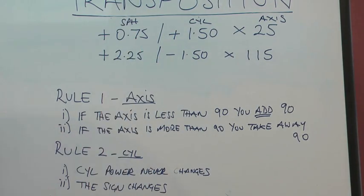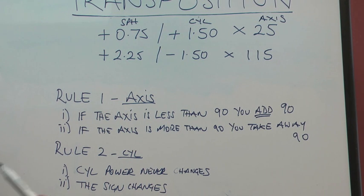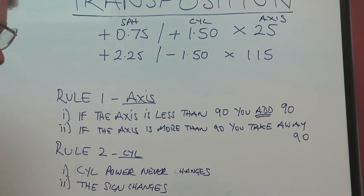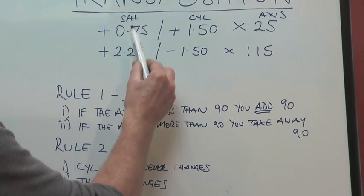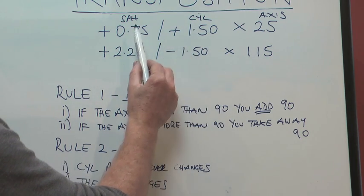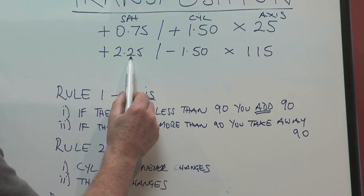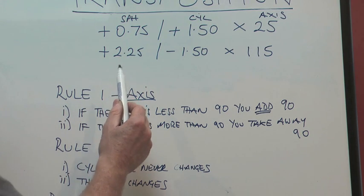So now we go on to the sphere. And the sphere is a little bit more complicated, but it's still quite straightforward. Now if the signs are the same, in order to get the new sphere power when you transpose it, if the signs are the same, you add the two numbers together. So you've got 0.75 plus 1.50 is equal to 2.25. So when you transpose this one, you end up with a sphere power of plus 2.25.